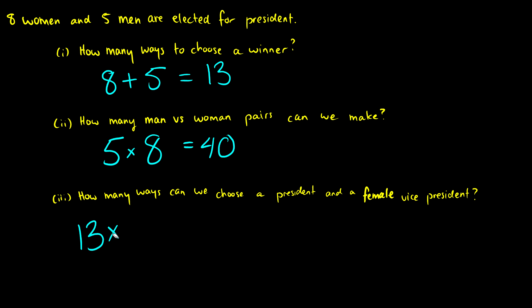So our first scenario here, we have a male president. So let's do that. We choose a president from the man, it's five, and then we choose a female vice president. So now we have eight possible choices.